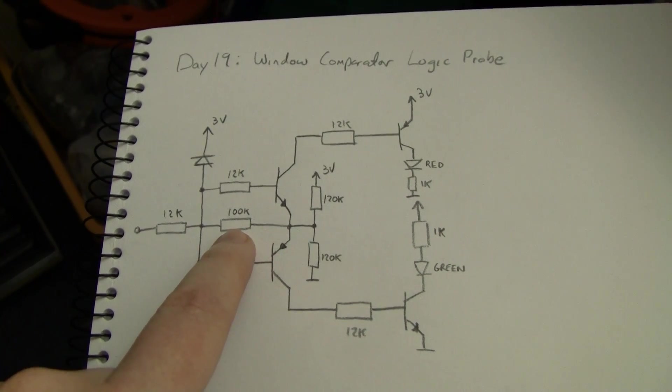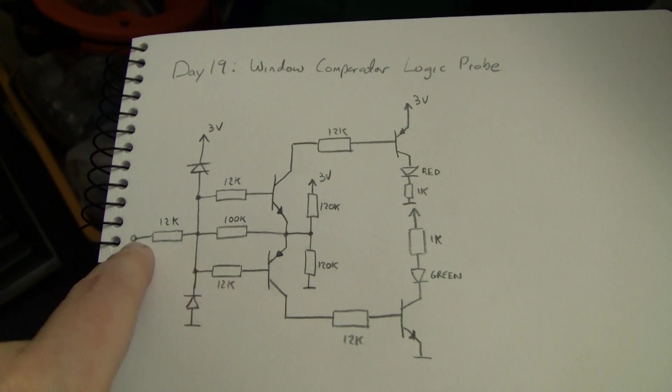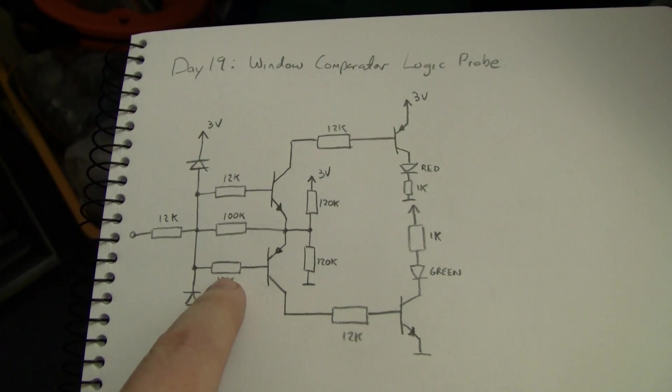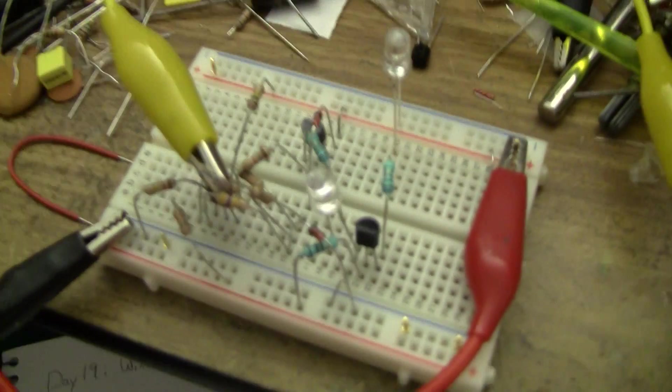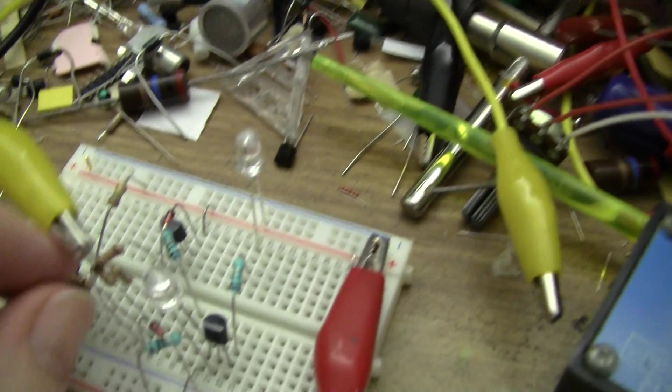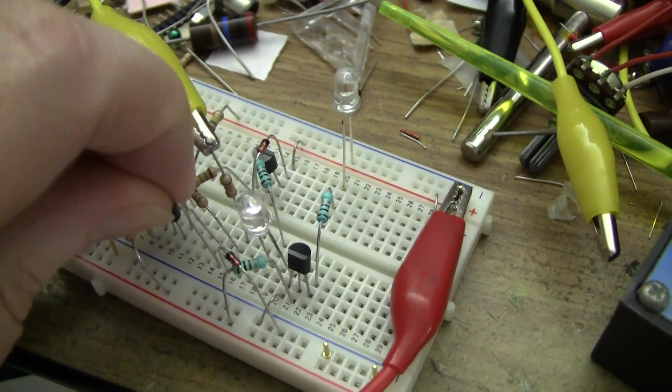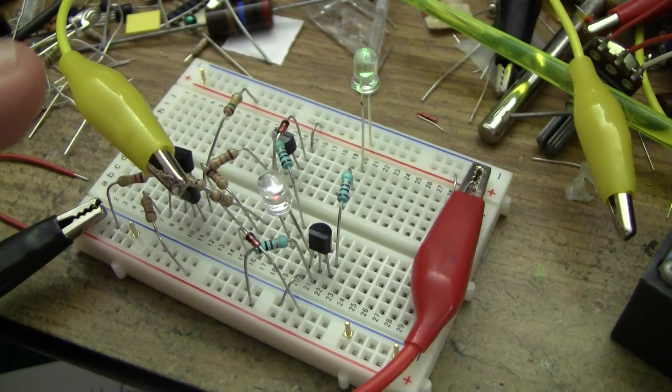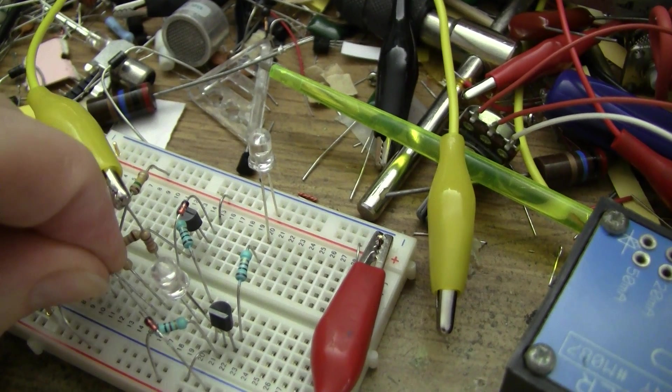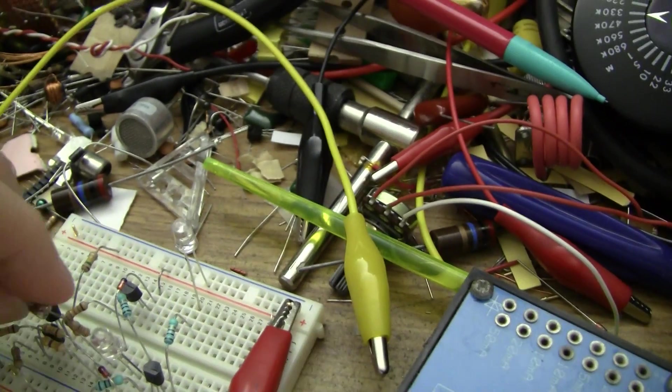This 100k resistor can actually be absent, but then the input floats and will pick up noise because it's a very high impedance input. In fact, I can show you that by pulling the resistor. It's probably not going to pick up the hum on my body now, but I actually used a 470k resistor there, you can see it's picking up hum, particularly when I touch it. Let me put that back in.